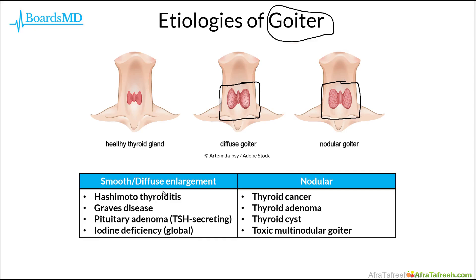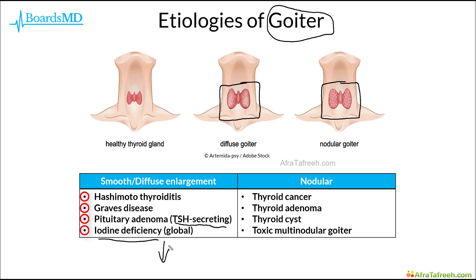In the case of the smooth or diffusely enlarged goiter, our differential includes Hashimoto thyroiditis, Graves' disease, pituitary adenomas (especially those secreting TSH, which can stimulate the thyroid gland), as well as iodine deficiency, which is a very common cause of goiter worldwide. In iodine deficiency, we have a decrease in thyroid hormone production, resulting in a subsequent increase in TSH level, thus resulting in stimulation of the thyroid.